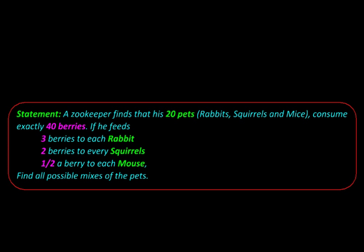Here we are going to do a very arithmetic sounding problem in a geometric manner. Actually it's a puzzle which says that there is a zookeeper who has 20 pets in his care - they consist of rabbits, squirrels, and mice - and they are found to consume exactly 40 berries in the following manner: each rabbit gets three berries, squirrels get two berries each, and half a berry is given to each of the mice.